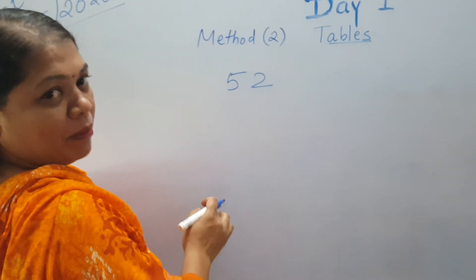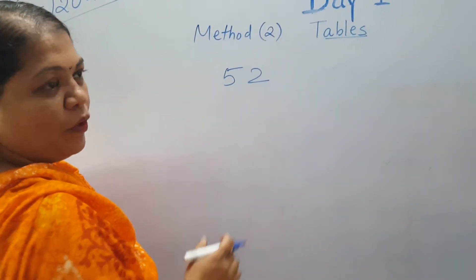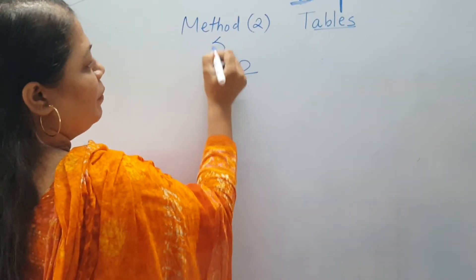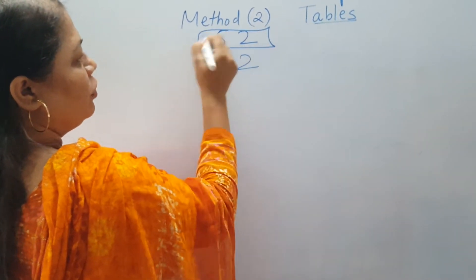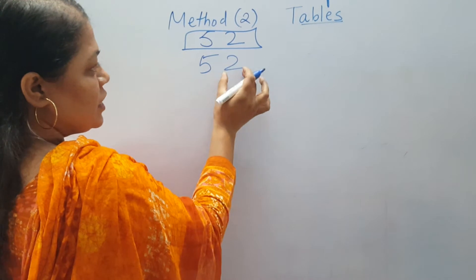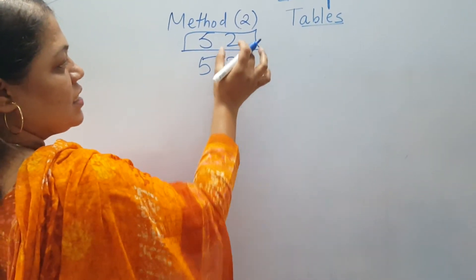We have done the second method of the table. 52 table. 52 is the unit. You can find unit plus 3. Unit plus 3 addition. 1 is the unit plus 3 addition.